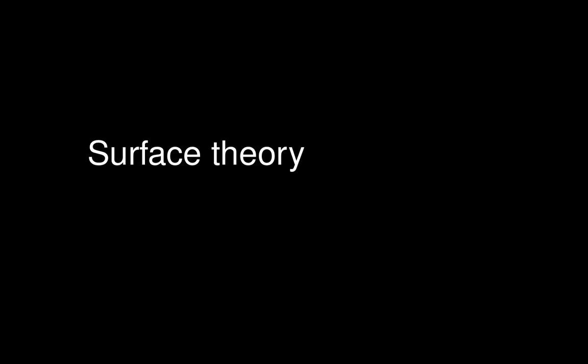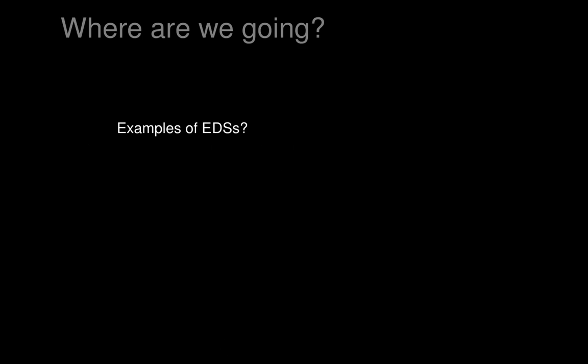This is the second lecture in a series of lectures on Introduction to Exterior Differential Systems. In this lecture we will be thinking about surface theory. We want to construct examples of exterior differential systems, and what could be simpler than to construct the lowest dimensional examples we can come up with? Among the lowest dimensions we can find are surfaces in three-dimensional space, so we will look for equations on surfaces in three-dimensional Euclidean space.